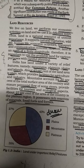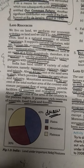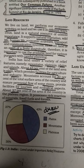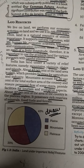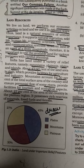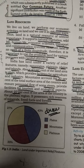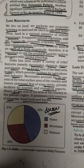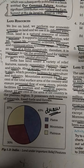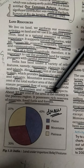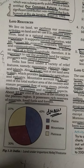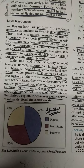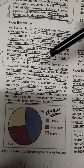Plains like the northern plains and coastal plains provide facilities for agriculture and industry, as agriculture and industries are possible mainly in plains. Mountains account for 30% of the total surface area — like the northern Himalayas and eastern Himalayas — which are covered by mountains.